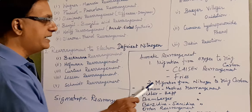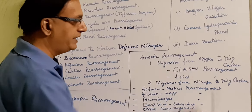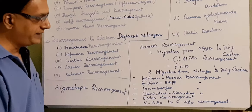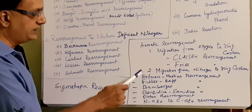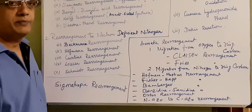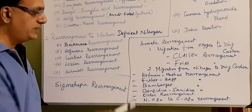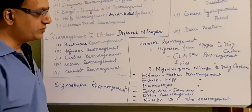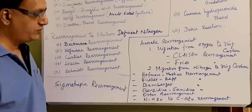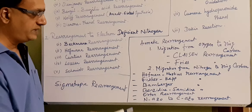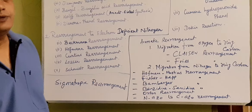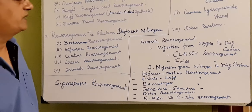Migration from nitrogen to ring carbon is classified as: Hofmann-Martius rearrangement, Fischer-Hepp rearrangement, Bamberger rearrangement, Benzidine-Semmidine rearrangement, Orton rearrangement, and N-azo to C-azo rearrangement.